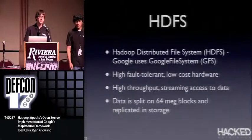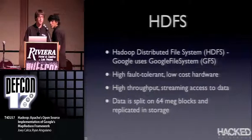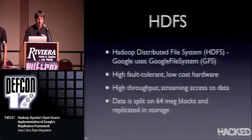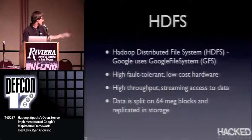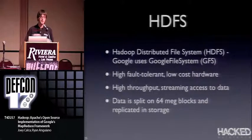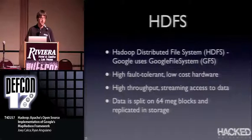Since Hadoop is an implementation of Google's MapReduce framework, everything has a Google equivalent. Hadoop uses HDFS — the Hadoop Distributed File System — equivalent to Google's file system. It's highly fault-tolerant, runs on low-cost hardware, and provides high-throughput streaming access to data. Importantly, data is split into 64 MB blocks and replicated in storage. That 64 MB split matters: a 65 MB file gets split into a 64 MB piece and a 1 MB piece, creating two mappers — one running at full capacity and one running very fast but inefficiently. You need to consider how many files to split your input into and what size to make each file.